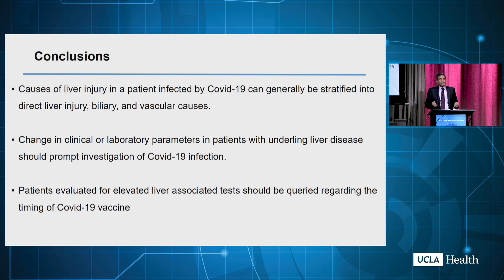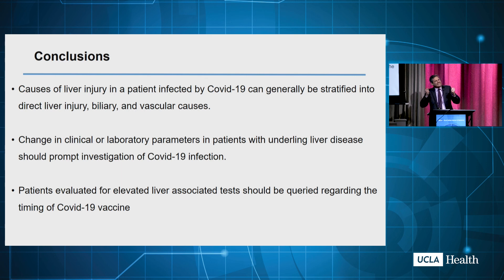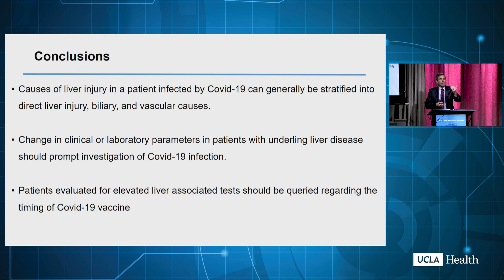In summary, the cause of liver injury in a patient affected by COVID can be stratified into several buckets: direct liver injury — about 25% of people can have elevated liver tests; bile duct problems; secondary cholangitis, which is often very progressive and fatal; vascular conditions from the hypercoagulable state — think about clots in the context of unexplained elevated liver tests; and vaccine-induced liver injury. Changes in clinical laboratory parameters should prompt investigation for COVID-19. When you see a patient with elevated liver tests, query them — ask when was their last COVID-19 vaccine. Thank you for your attention.